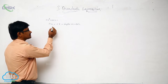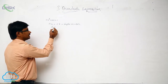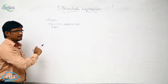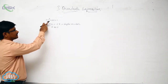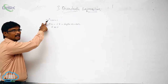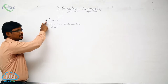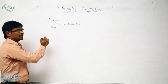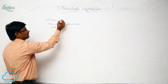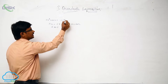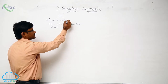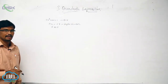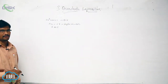In this expression, A should not be equal to 0. That is, the x squared coefficient should not be equal to 0. Then we can say that this polynomial is called a quadratic expression.